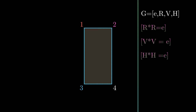Now we are going to stop adding elements to G and try to figure out some other properties. Along with R star R = E, and V star V = E, we also have H star H = E. This means R is its own inverse, V is its own inverse, and the same goes for H.